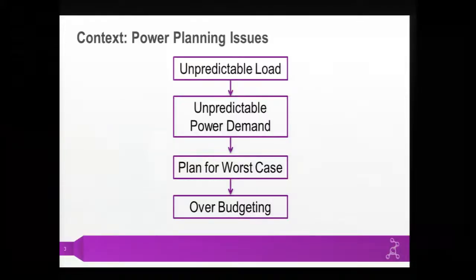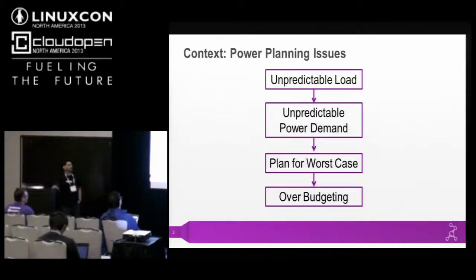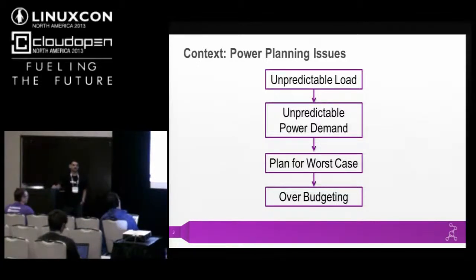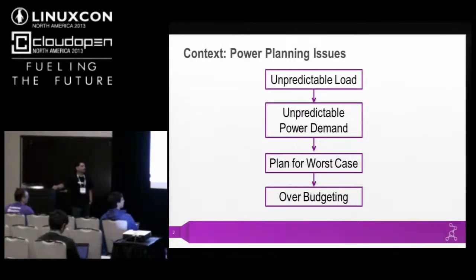Let us start by looking at a very typical problem faced by a power planner. The major issue is that the load is unpredictable, so the power demand also becomes unpredictable. That may lead to a tendency to plan for the worst case, but that is not the true figure — planning for worst case is not the right thing, because that is not your true load consumed for computation. So that results in over-budgeting.